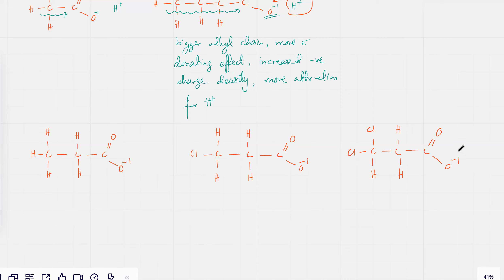Is it going to have a larger negative charge or a weaker negative charge? Larger. It's going to have a weaker negative charge because what effect would Cl have? Is it going to be an electron withdrawing effect? TK, Cl is a highly electronegative element.